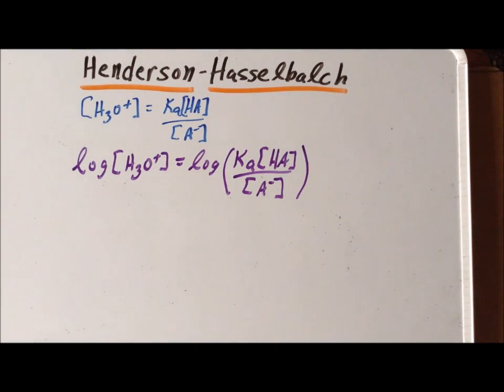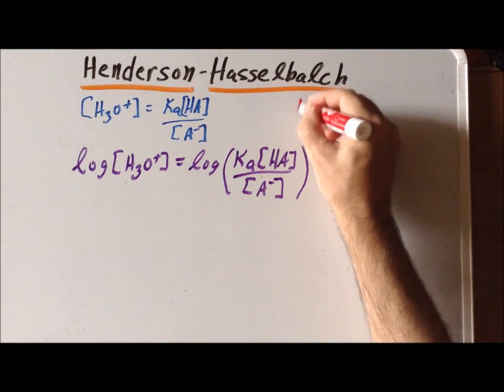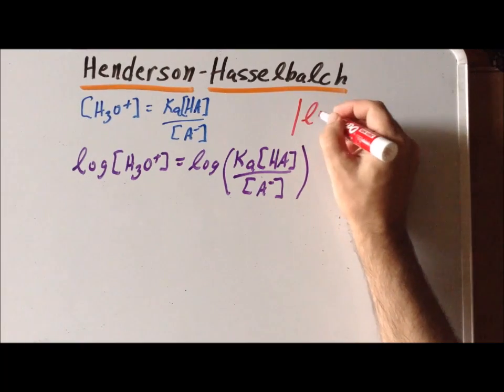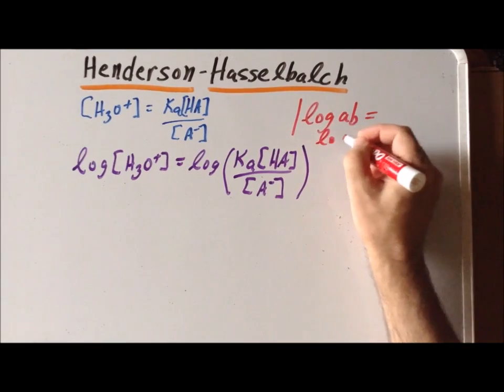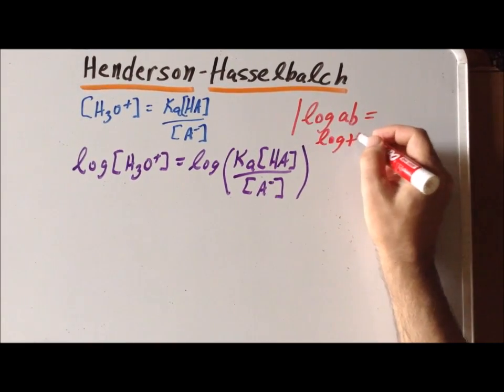To simplify the right-hand side, we are going to make use of an important property of logarithms. Which is that the log of a product AB is equal to the log of A plus the log of B.